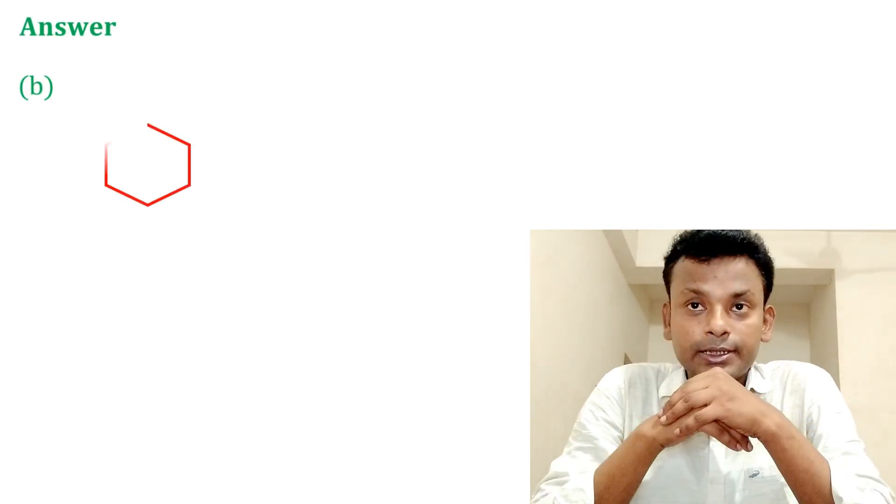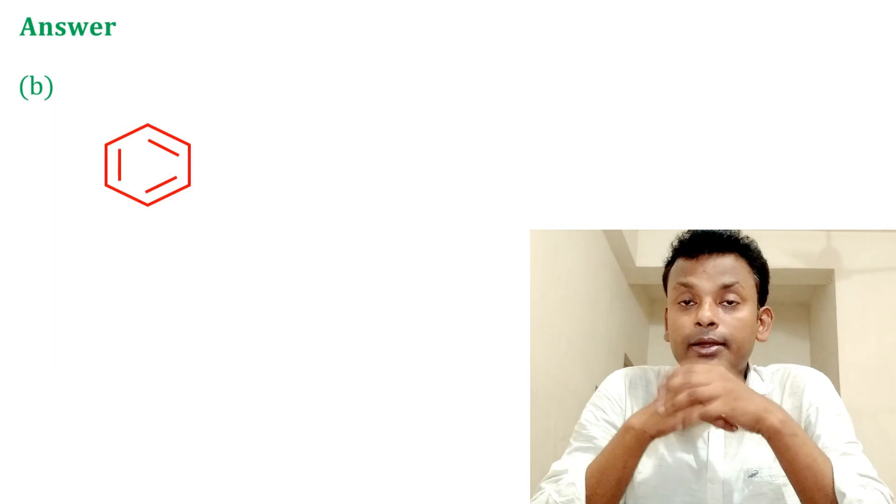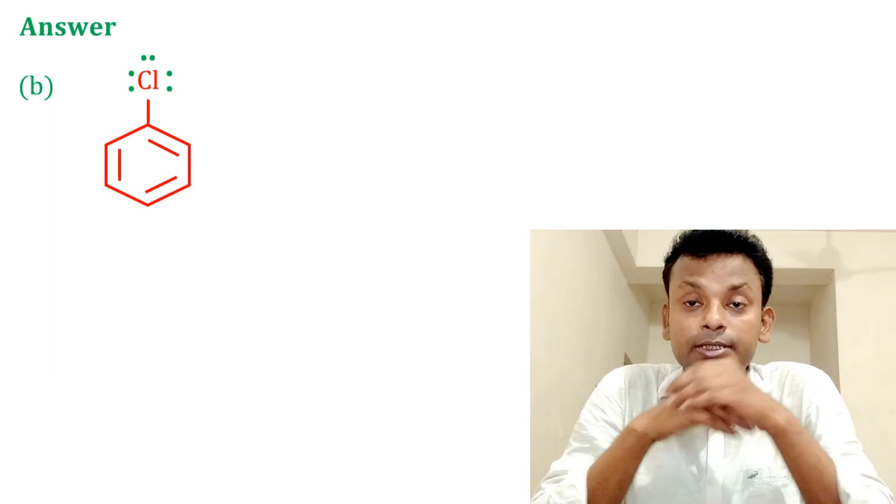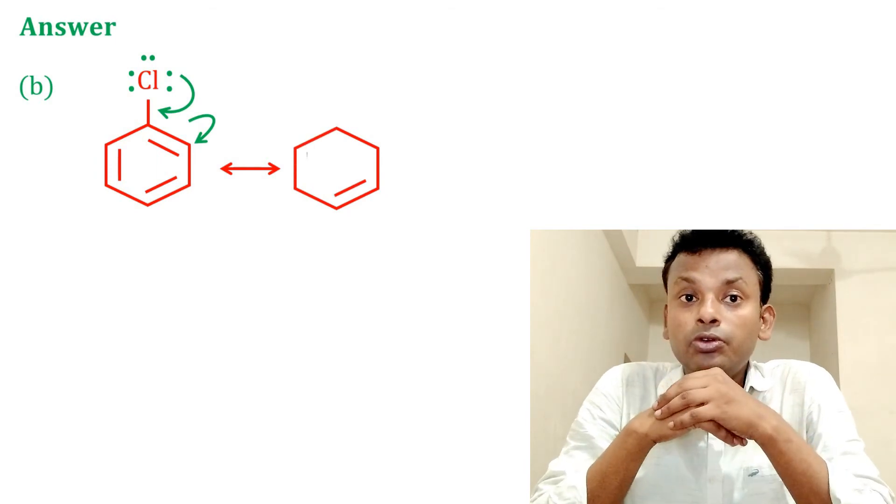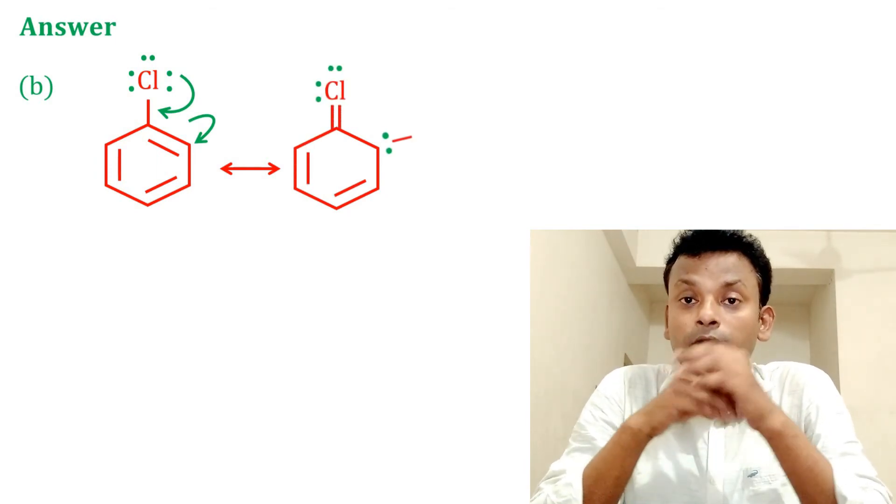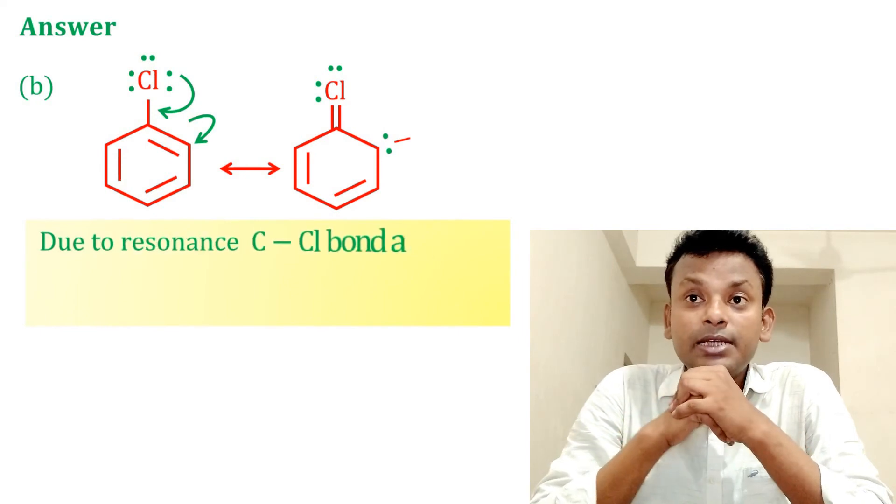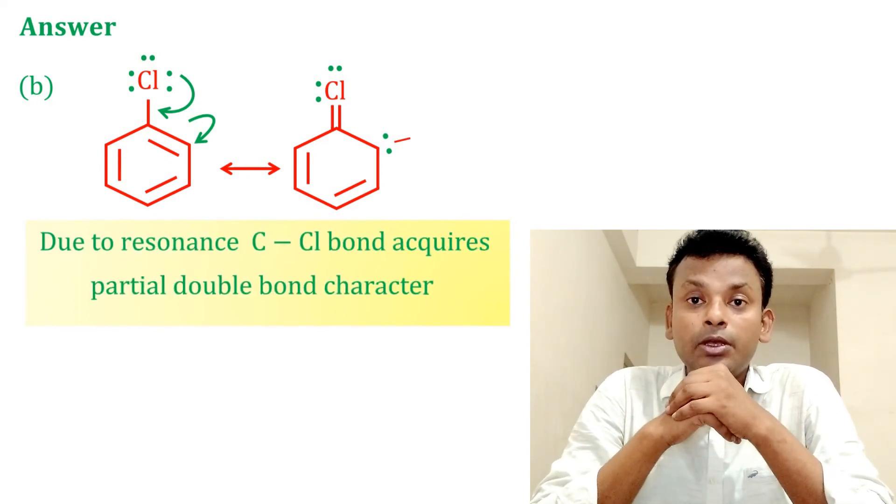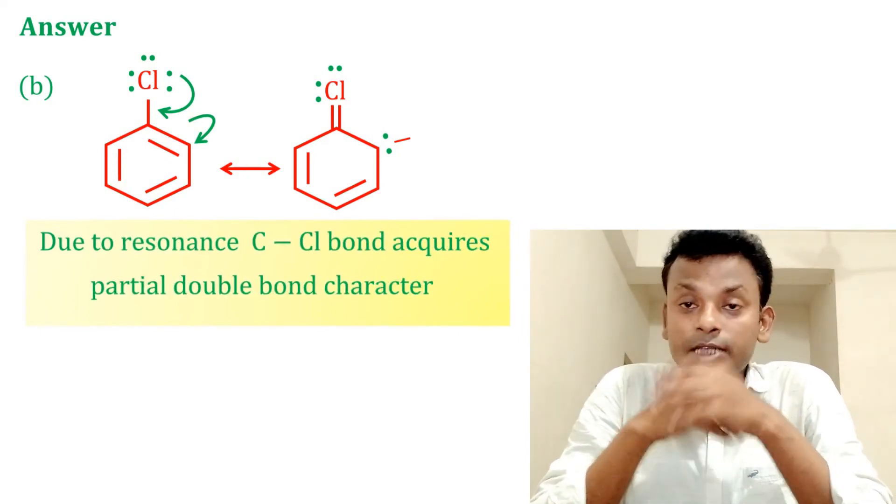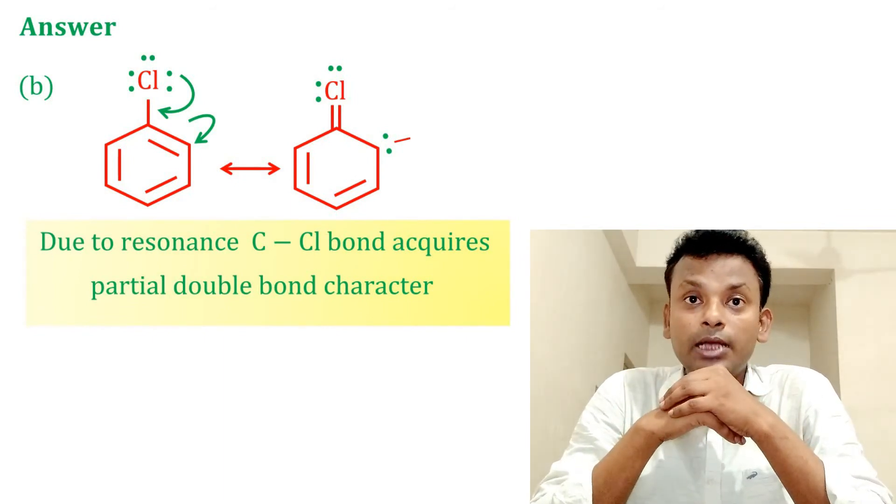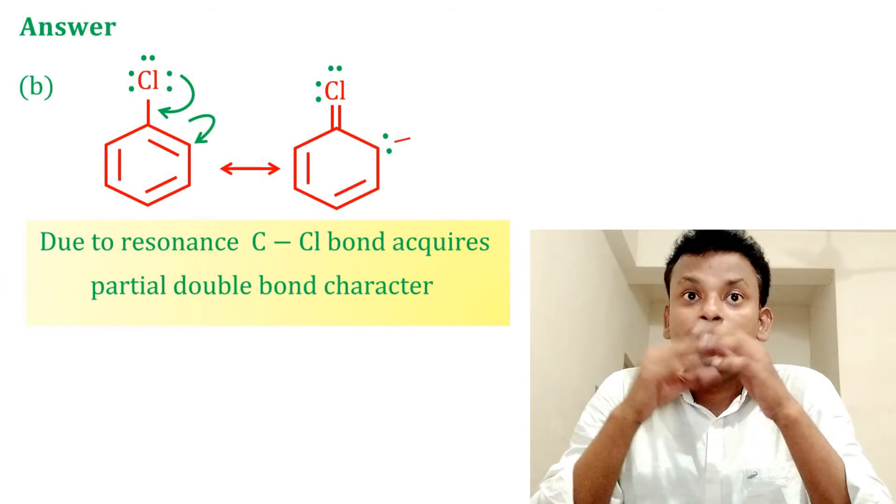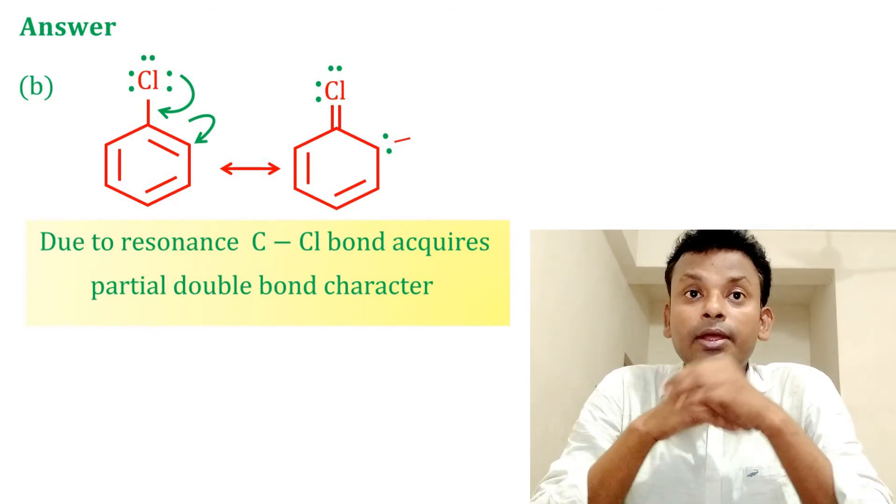Now we explain more. We know that chlorobenzene has resonating structure. And from this canonical structure, due to resonance of C-Cl bond, which has partial double bond character, so potassium salt of phthalimide treated with chlorobenzene followed by hydrolysis with aqueous NaOH cannot give aniline.